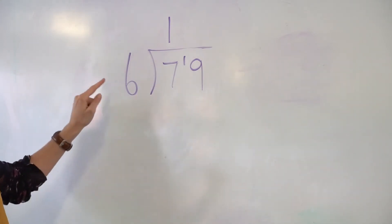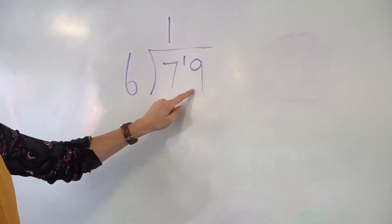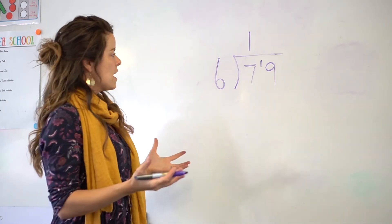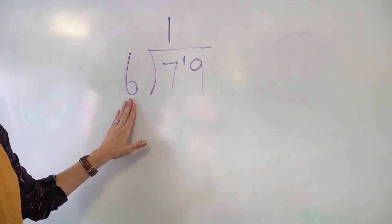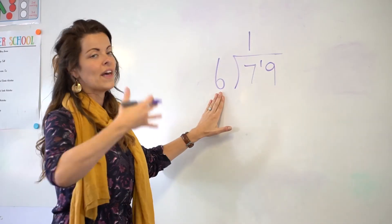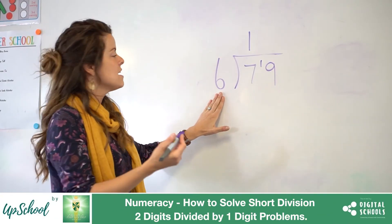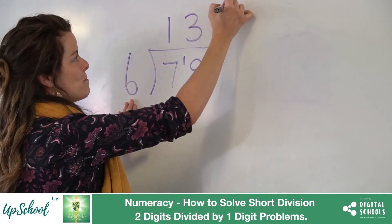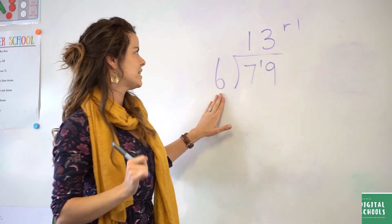So the next question I would ask is how many times does 6 go into 19? I know my 6 or my 3 times tables, so using that I know that 3 times 6 is 18, and I couldn't take it any further than that or I'd be well over 19. So I would pop my 3 up here and I have a remainder of 1. So 13 remainder 1.